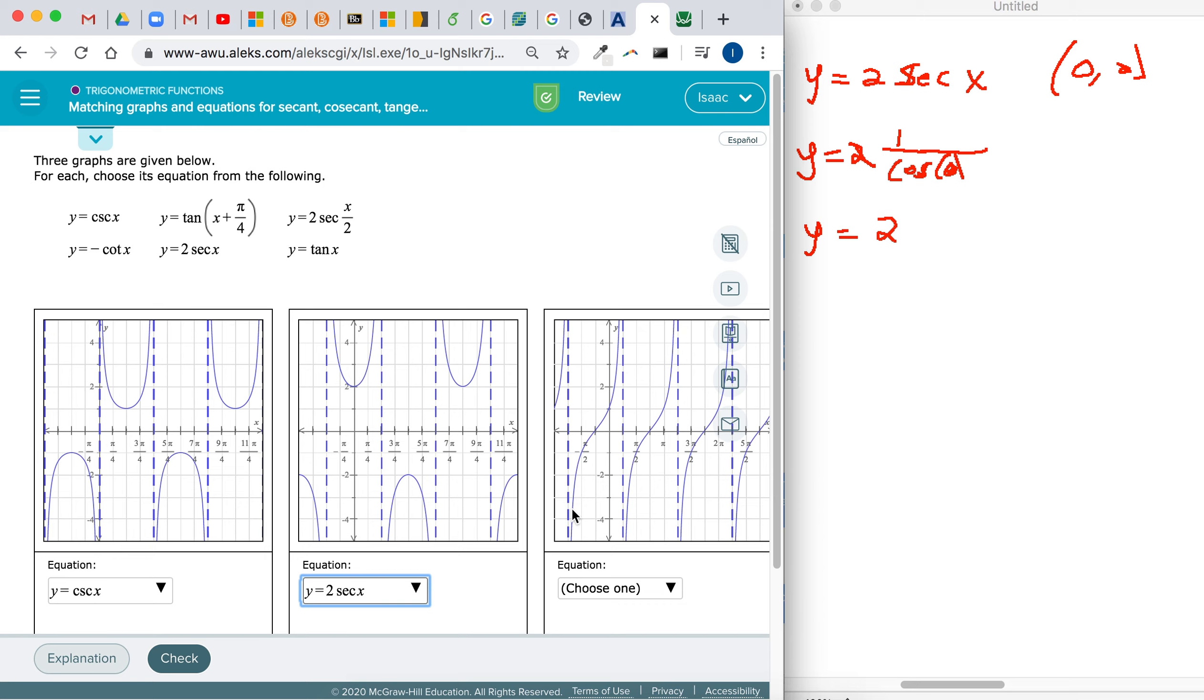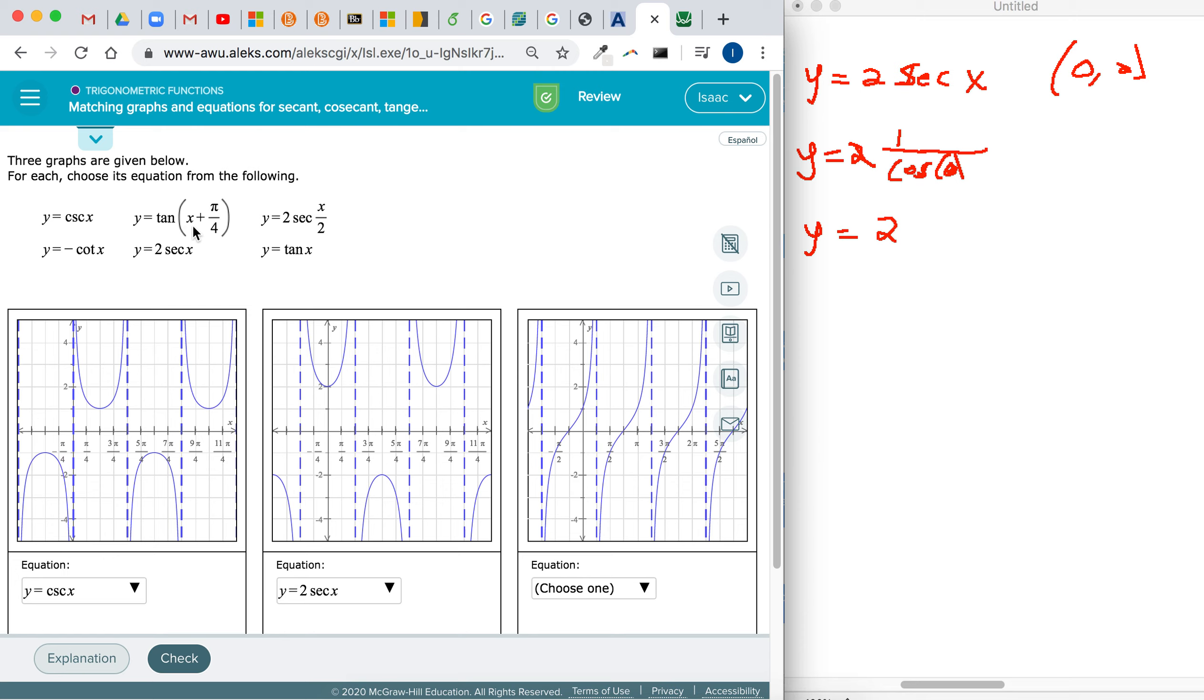And then we said tangent has this type of graph. Tangent and actually cotangent too, they make the same kind of wave graph. So we know this one has to be either this tangent x plus π/4, the negative cotangent x, or the tangent x. So let's just start with tangent x plus π/4. You could use the point plug-in method.